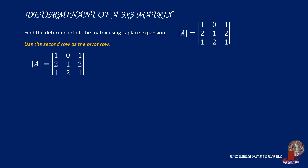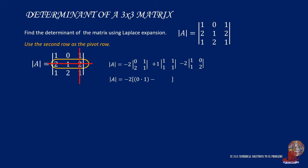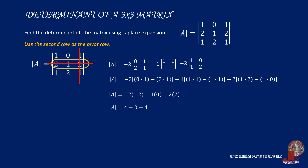If we choose the second row as the pivot row, the first term is the negative of the element itself — that is negative 2 multiplied by its minor. The second term is positive 1 multiplied by the determinant of elements 1, 1, 1, and 1. The third term is negative 2 times the determinant of 1, 0, 1, and 2. Expanding gives negative 2 times negative 2, plus 1 times 0, minus 2 times 2, and again the determinant of matrix A is 0.